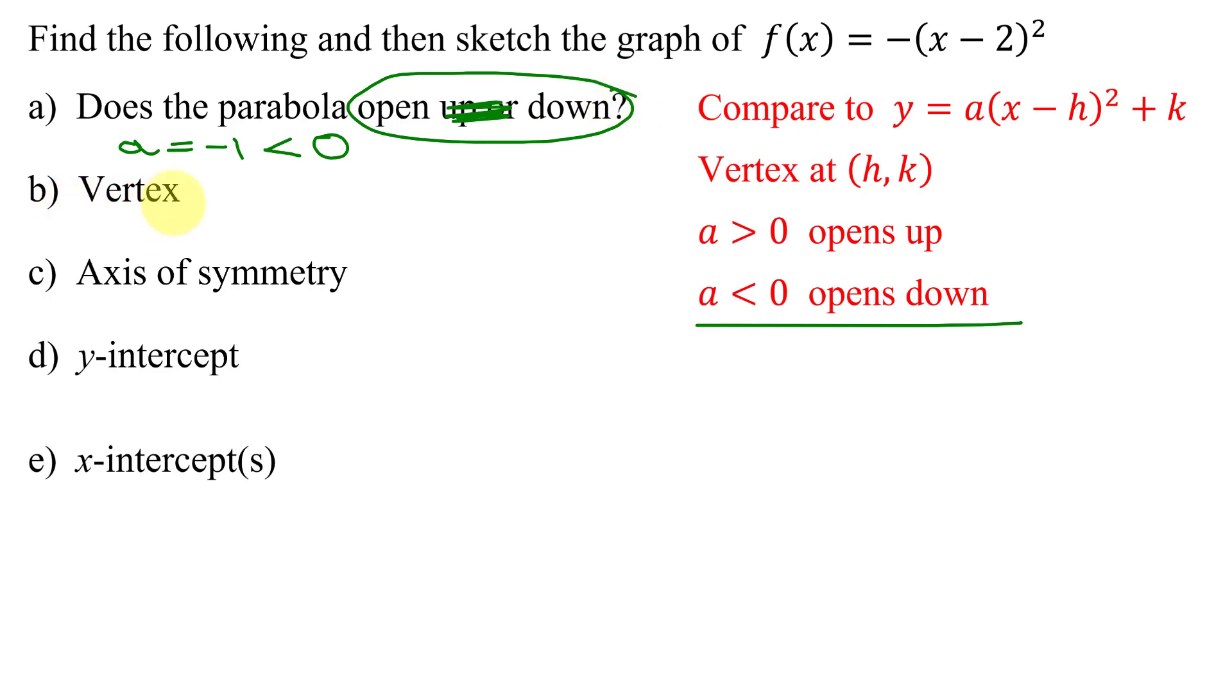Next to find the vertex, it's at the ordered pair (h,k). h, the x-coordinate of the vertex, is at the opposite of this number. So it's going to be at the opposite of negative 2, which is positive 2. k, the y-value of the vertex, is this number. Is there a k-value here? No. So we know k is 0. So the vertex is at the ordered pair (2, 0).